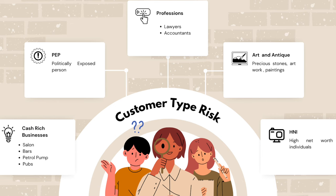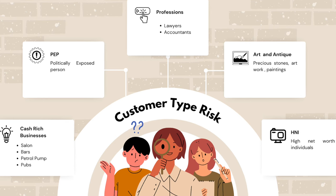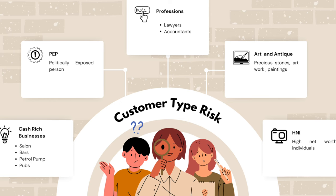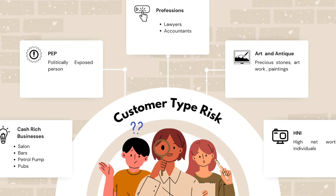Apart from that, customer type risk also includes the risk of a Politically Exposed Person — in short, we call it PEP. We will have a very detailed video on PEP because it's very important to understand. PEP is not just a person who is a politician or directly associated with any political group; it also includes a lot of other people around that person. For now, just understand that PEP is considered a high-risk customer.